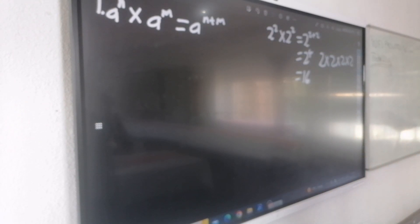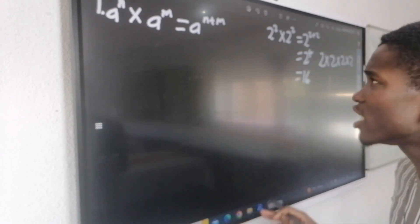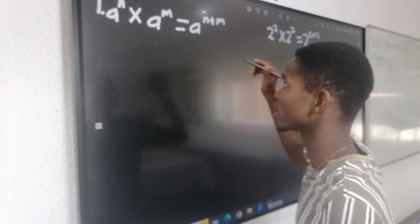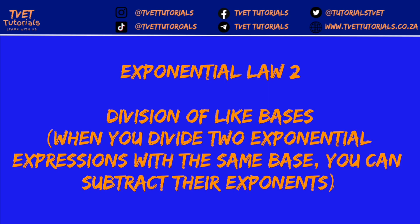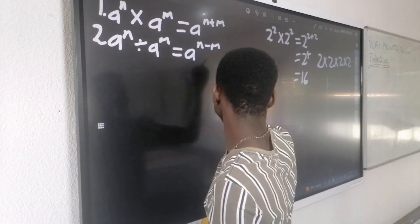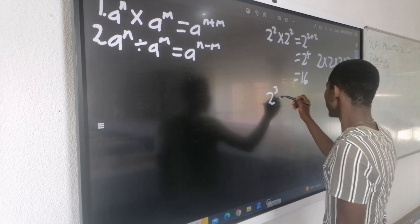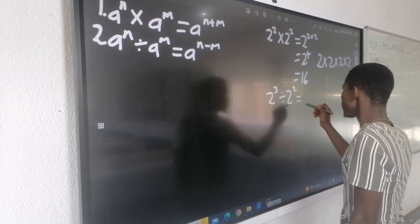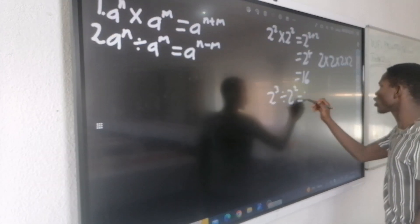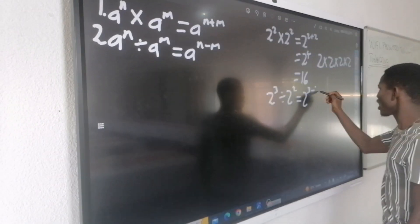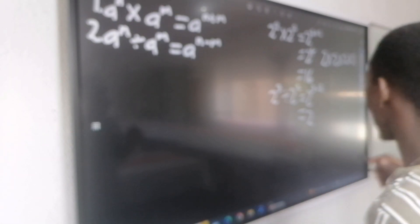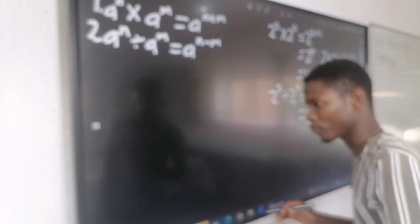Number 2 opposes that one, because the opposite of multiplication is division, and the opposite of addition is subtraction. Law number 2 says that if we divide powers with the same base, we subtract the exponents. For example, 2 to the power of 3 divided by 2 to the power of 2 — because same base, I write only one base and subtract the exponents, which gives 2 to the exponent of 1. But I am not allowed to write an exponent of 1, because it is always there — it is invisible.